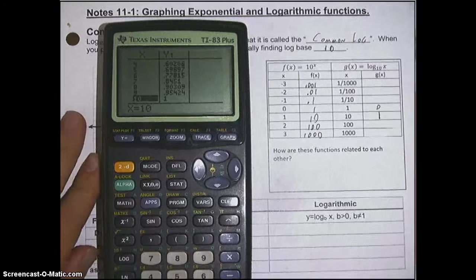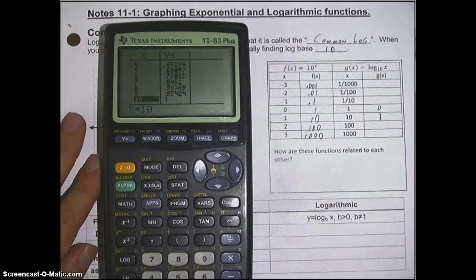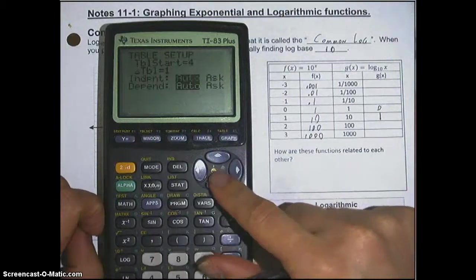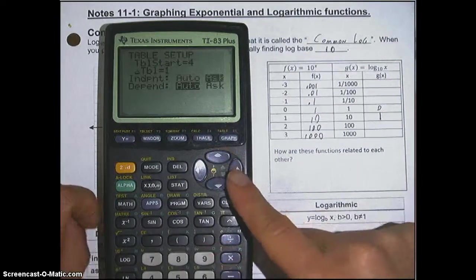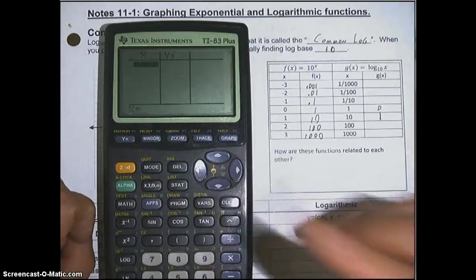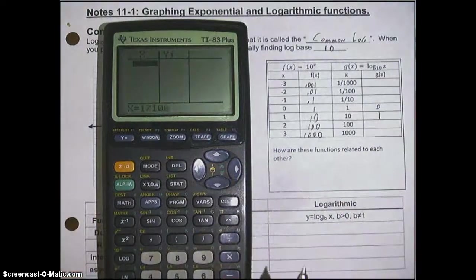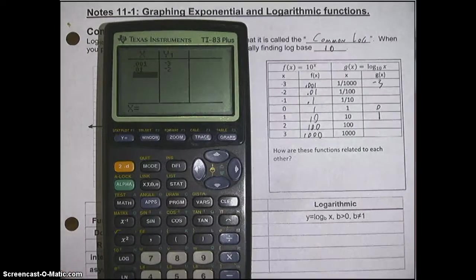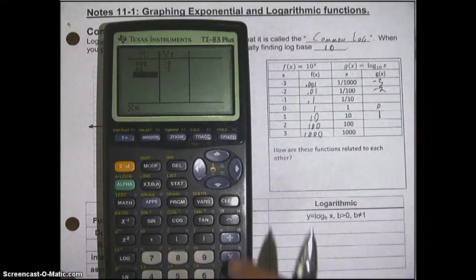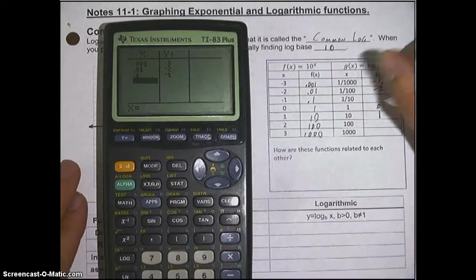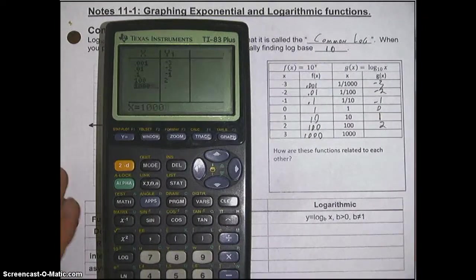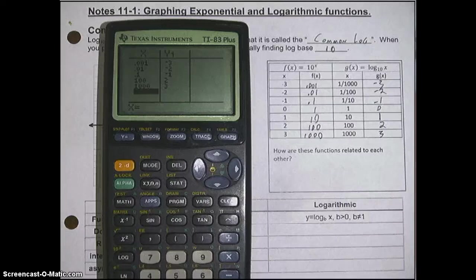But to get the other values, there's a couple of different things you can do, but there's a little trick I like to use in the calculator. If you go second window and change the independent variable from auto to ask, when you go back to the table, you just type in the x value. 1, and I want 1 over 1,000, which is negative 3. And I also want 1 over 100, which is negative 2. And I want 1 over 10, which is negative 1. 100 is 2, and 1,000 is 3. So if you change it from auto to ask on the independent variable, it's going to spit out the numbers that you're looking for here.